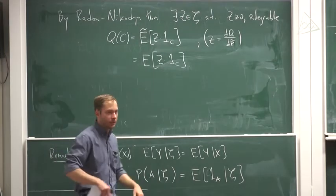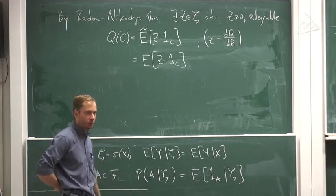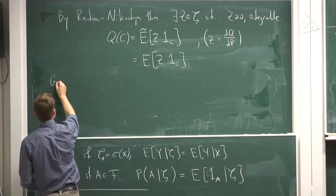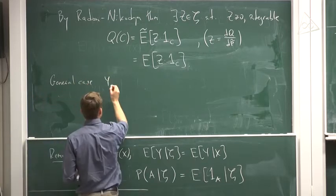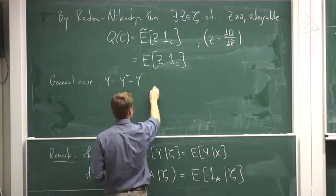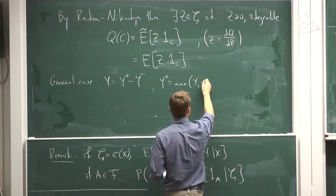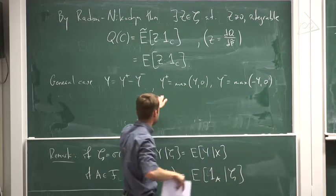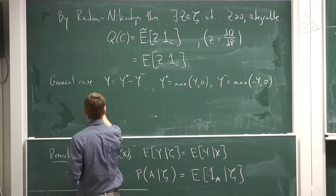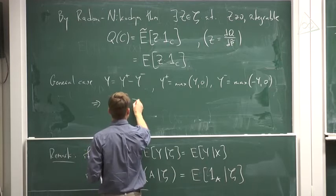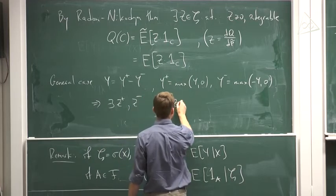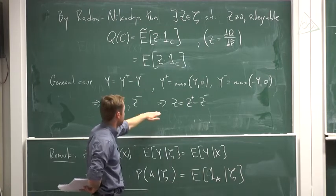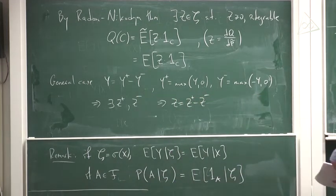In probability, it's quite common to first prove a result for non-negative random variables and then extend to the general case by the following trick: we write the random variable Y as the difference Y⁺ and Y⁻, where Y⁺ = max(Y, 0) and Y⁻ = max(−Y, 0). Both random variables are non-negative. For them, there exist Z⁺ and Z⁻ by the first part of the theorem, and we define Z = Z⁺ − Z⁻. By the linearity of expectation, Z indeed satisfies the required equations.